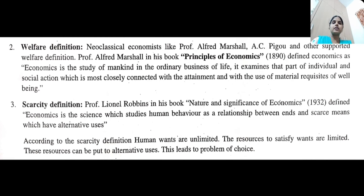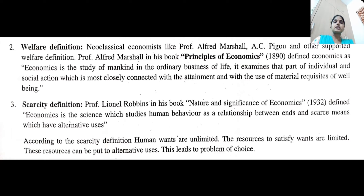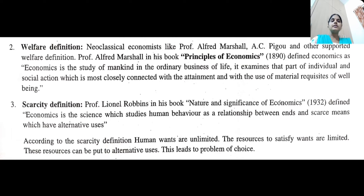The third one is the scarcity definition. Professor Lionel Robbins in his book Nature and Significance of Economic Science published in 1932 defined economics as: 'the science which studies human behavior as a relationship between ends, scarce means, and alternative uses.'